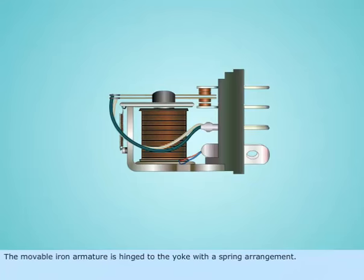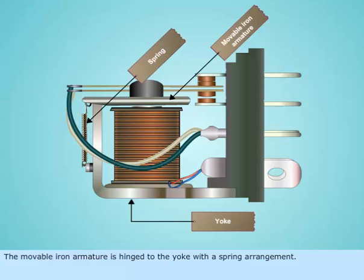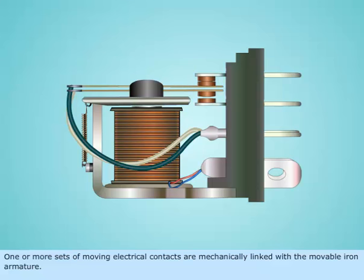The movable iron armature is hinged to the yoke with spring arrangement. One or more sets of moving electrical contacts are mechanically linked with the movable iron armature.